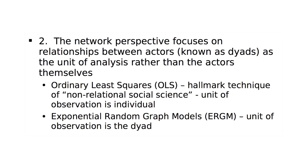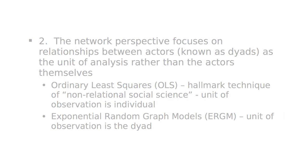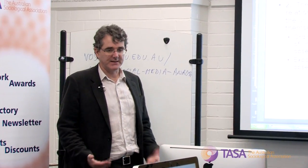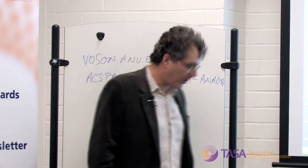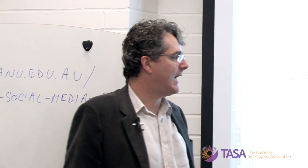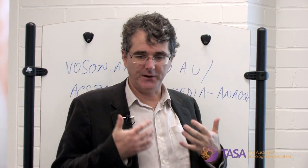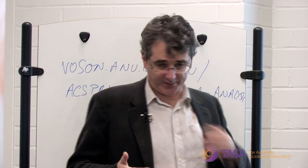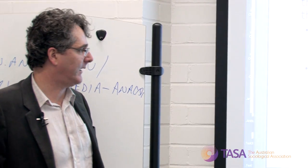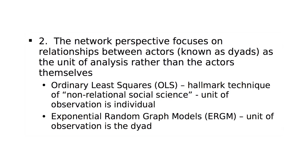The second aspect of the network perspective is that it focuses on relationships between actors. A pair of actors is known as a dyad, so dyads are the unit of analysis rather than the actors themselves. This is reflected in the statistical techniques used. The standard economics approach — ordinary least squares — is a hallmark technique of non-relational social science where the unit of observation is the individual. In contrast, a technique commonly used in social network analysis is exponential random graph models, where the unit of observation is the dyad.